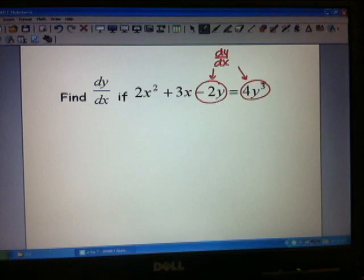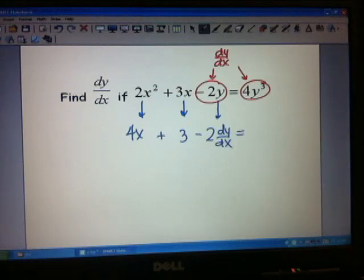So I'm going to end up with this 2x squared will become 4x. And then this 3x will just be 3. My negative 2y will be negative 2 dy/dx. And this is all going to be equal to 12y squared dy/dx. So that one's coming from there.